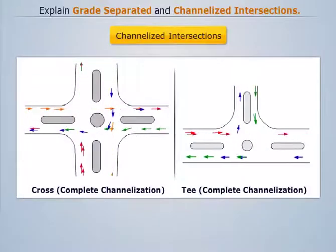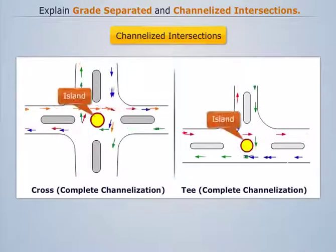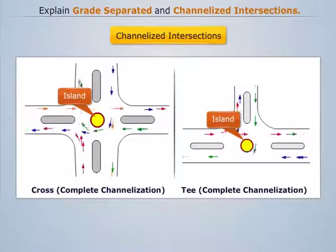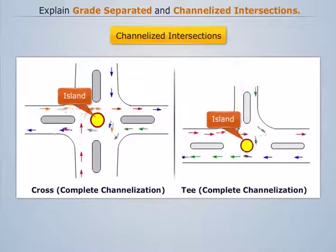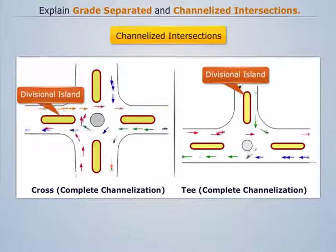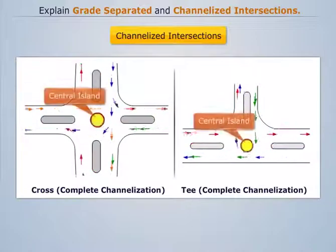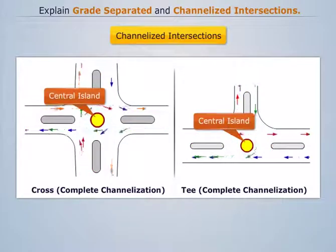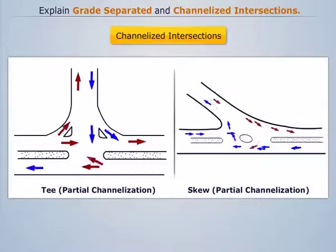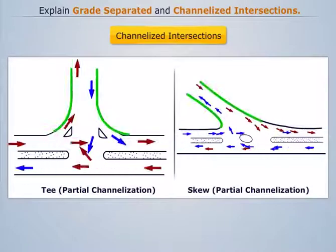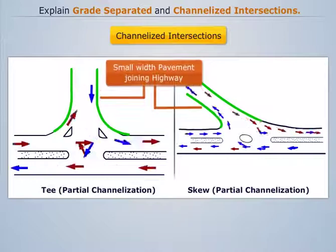Channelized intersections are achieved by introducing islands into the intersection area, which reduces the total conflict area. The divisional island is for separating traffic in different directions, and the central island is provided for turning movements. In partial channelization, one leg of the intersection is a small width pavement joining the main highway.